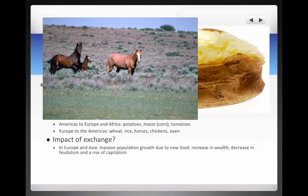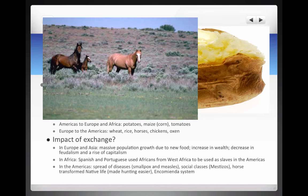What are some impacts of the exchange? In Europe and Asia, we see massive population growth due to new food, an increase in wealth, a decrease in feudalism, and the beginnings of the rise of capitalism. In Africa, the Spanish and Portuguese used Africans from West Africa as slaves in the Americas. In the Americas, we see the spread of diseases — particularly smallpox and measles — that killed many Native Americans, the emergence of social classes like the mestizos (people of mixed Native American and European ancestry), the transformation of Native life by the horse on the Great Plains and Great Basin, and the emergence of the encomienda system.